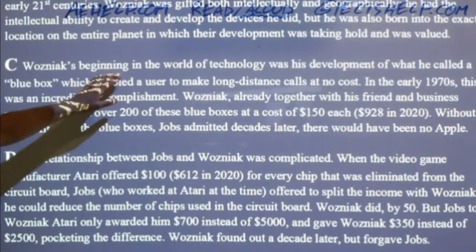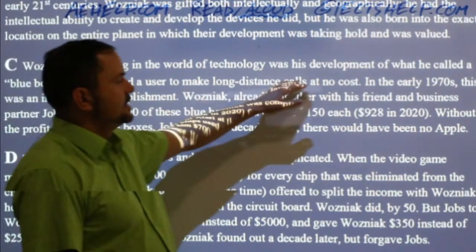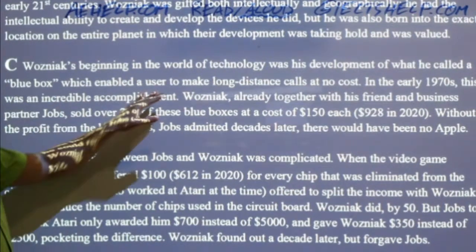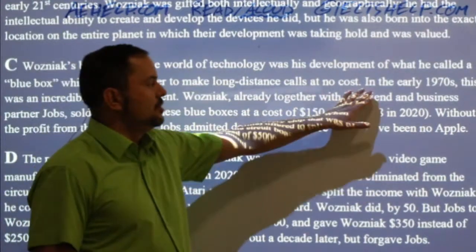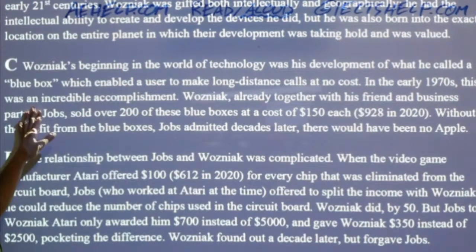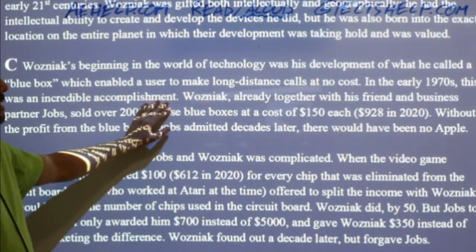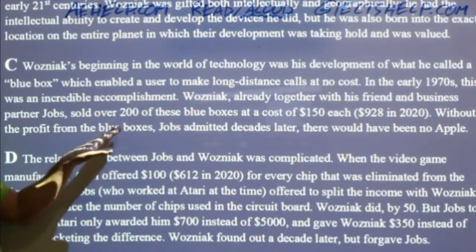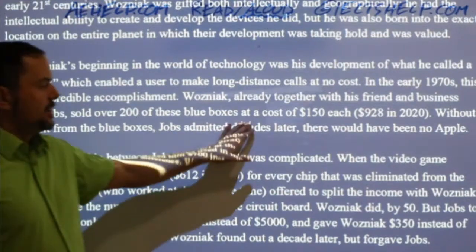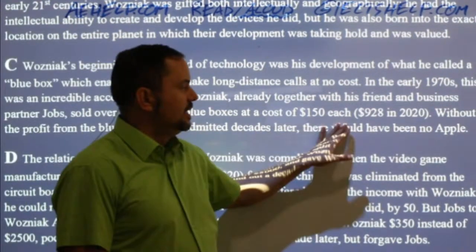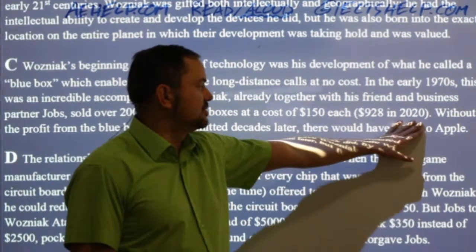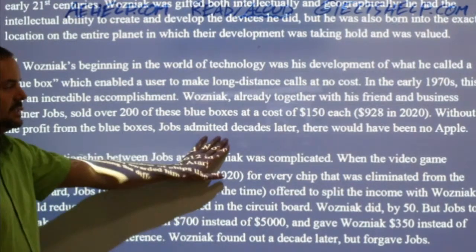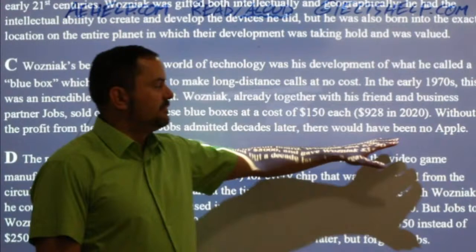Wozniak's beginning in the world of technology was his development of what he called a Blue Box, which enabled a user to make long distance calls at no cost. In the early 1970s, this was an incredible accomplishment. Wozniak, already together with his friend and business partner Jobs, sold over 200 of these Blue Boxes at a cost of $150 each — $928 in 2020 dollars. Without the profit from the Blue Boxes, Jobs admitted decades later, there would have been no Apple.